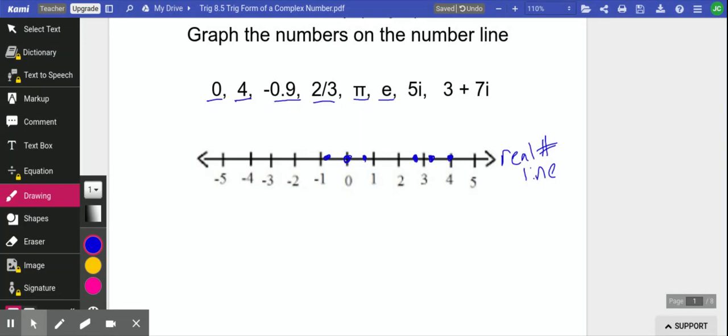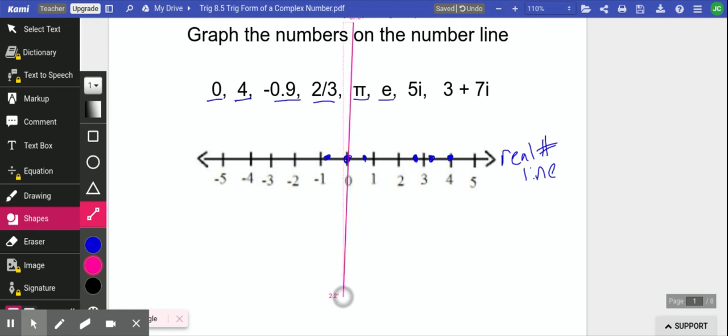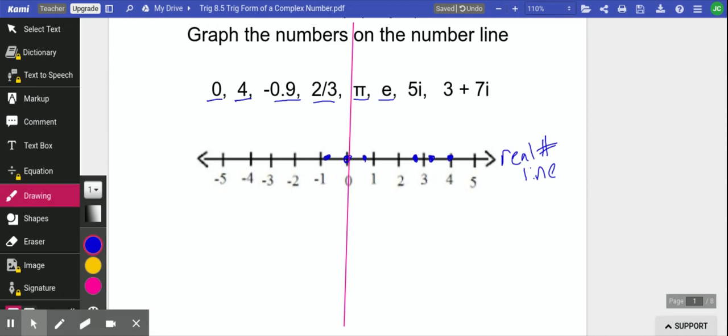In order to graph those numbers, we need to expand this. The way we do that is we expand with another axis. We call this axis the imaginary number line. Here it would be 1i, 2i, 3i, and so on.